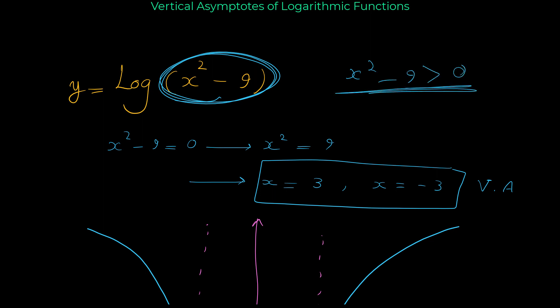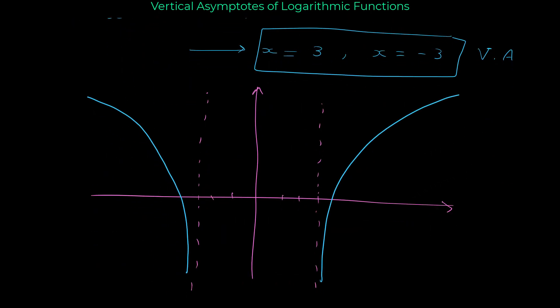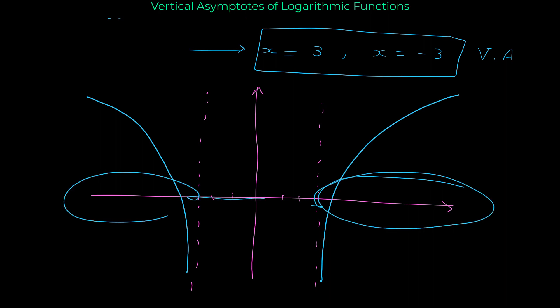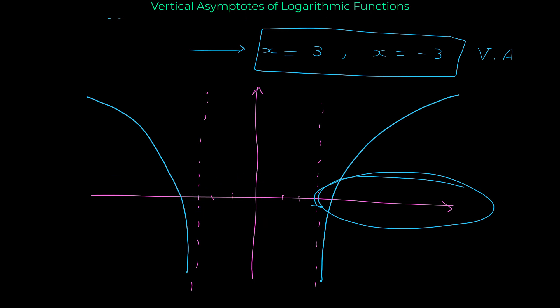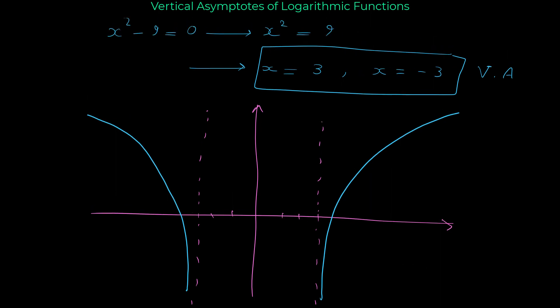Solving that inequality shows the domain of this function is x greater than 3 or x less than negative 3. That's why there is no graph between negative 3 and 3 — that interval is not part of the domain. The graph exists only outside those two vertical asymptotes.